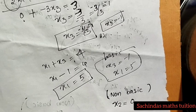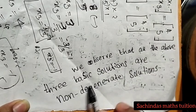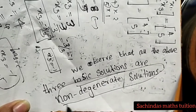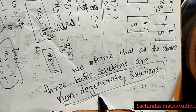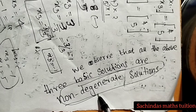We have basic solutions. We check for degeneration — if we have a zero among the basic variables it is degenerate; otherwise it is non-degenerate. This is a non-degenerate solution.